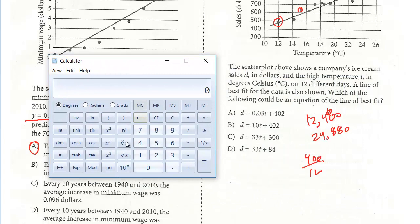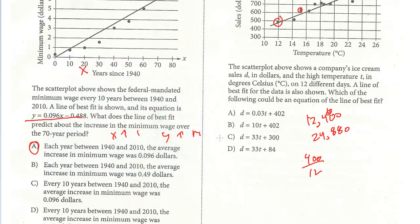All right, so 400 divided by 12. So our slope is 33 and a third. So right away, we're down to C and D. And now we just have to find the y-intercept.